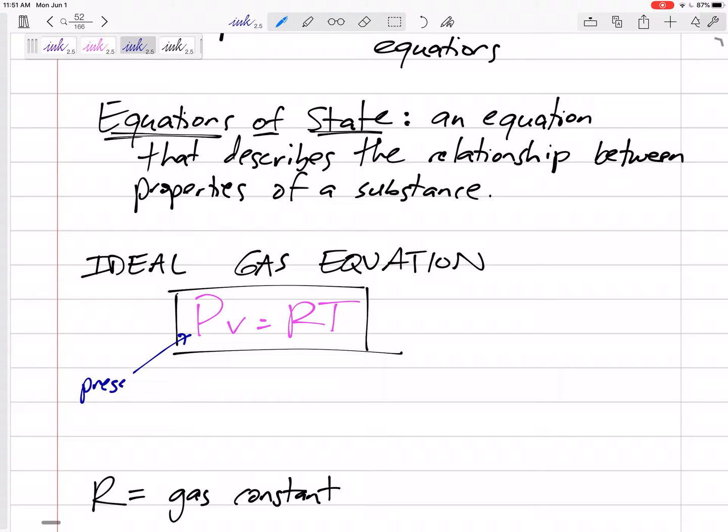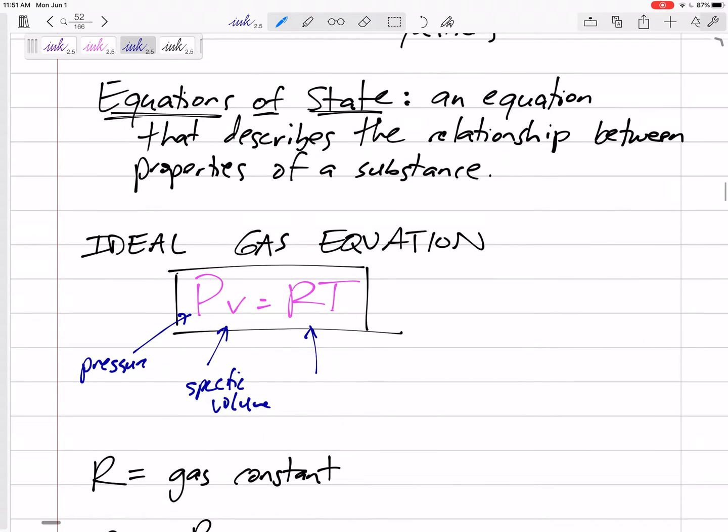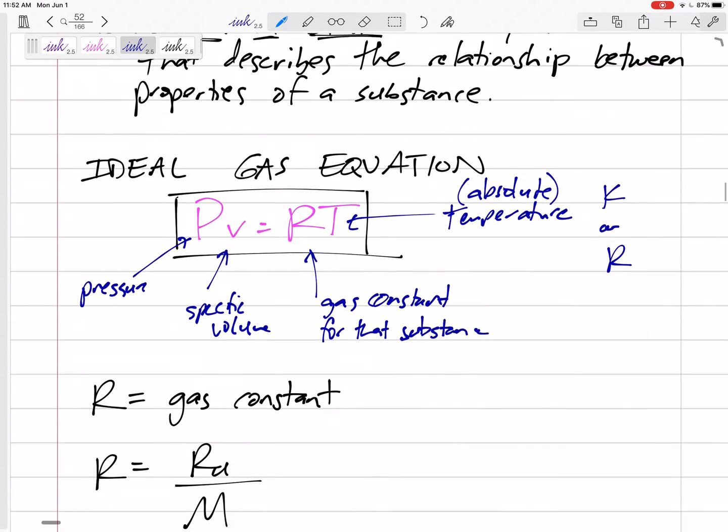So the ideal gas equation is PV equals RT. And let's talk about this. This is pressure times specific volume equals the gas constant for that substance times the temperature. This has to be the absolute temperature. In Kelvin if we're in SI units, Rankine if we're in English units, not Celsius. You will get the wrong answer if you plug in the temperature in Celsius.